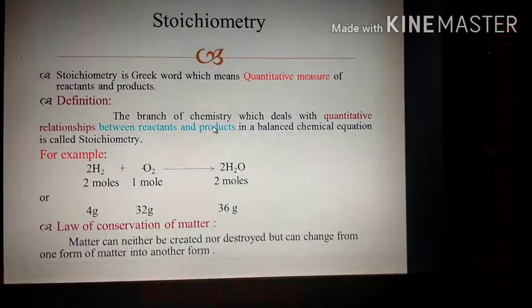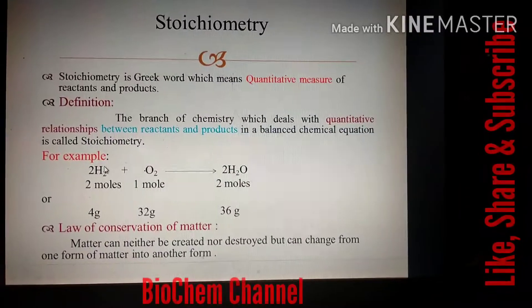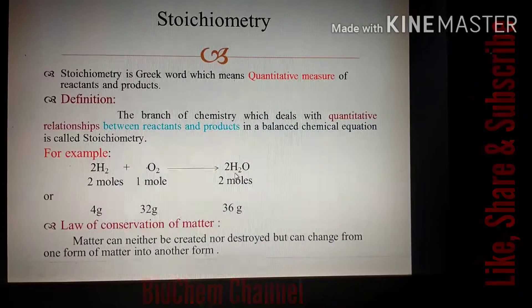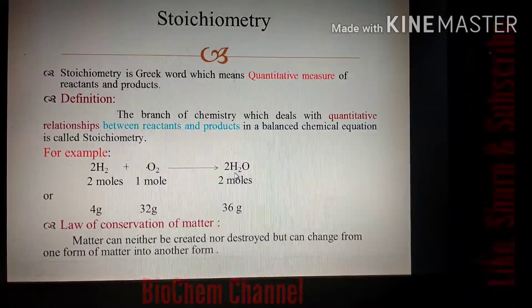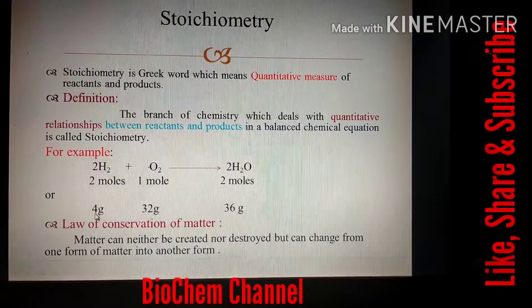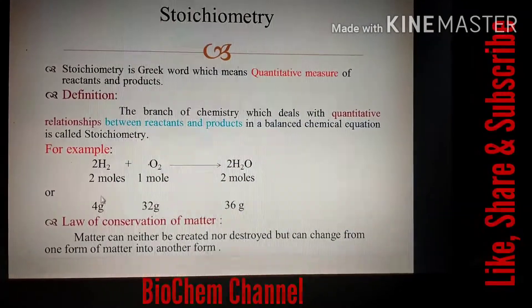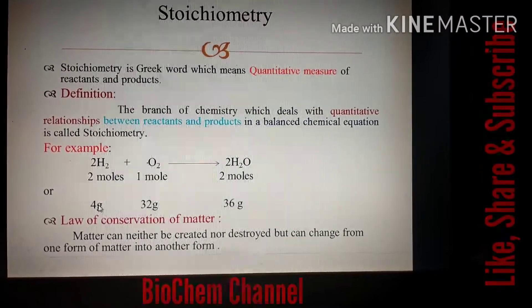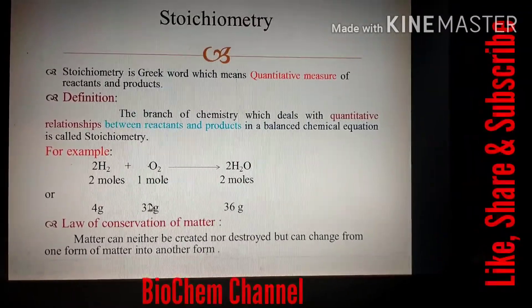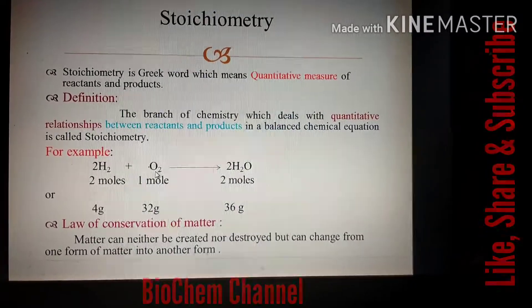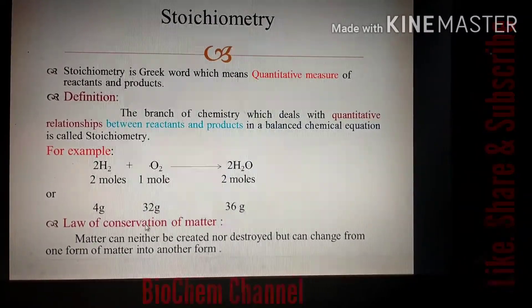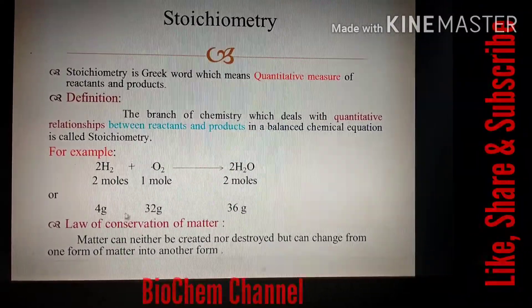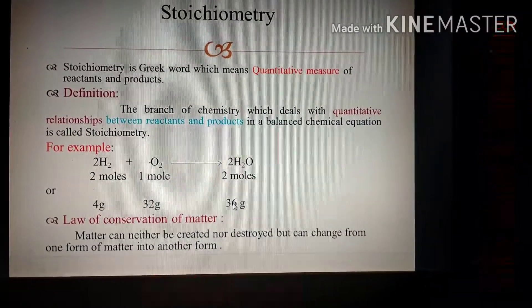For example, when two moles of hydrogen react with one mole of oxygen, it is converted into two moles of water. This means 4 grams of hydrogen plus 32 grams of oxygen — when reacted together — are converted into 36 grams of water.